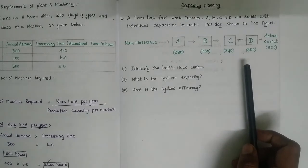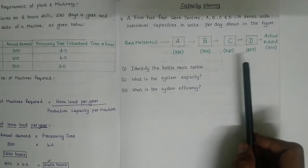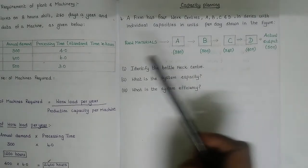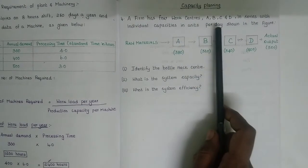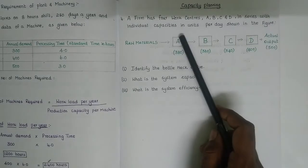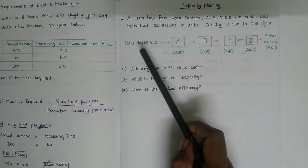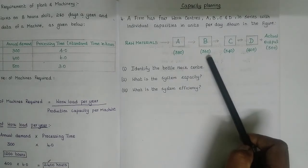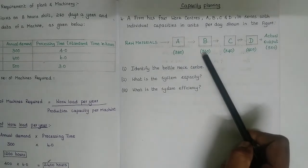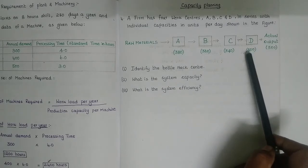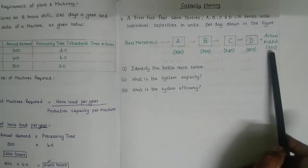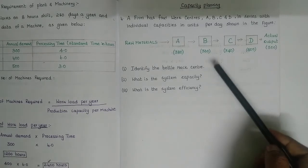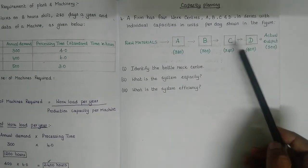The next problem is also on capacity planning. A firm has 4 work centers A, B, C, and D in series. Their individual capacities in units per day are: A = 380 units, B = 360 units, C = 340 units, D = 400 units. The actual output the firm produces is 300 units. The questions ask us to identify the bottleneck center, the system capacity, and the system efficiency.